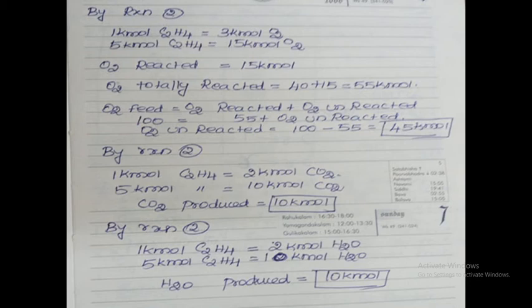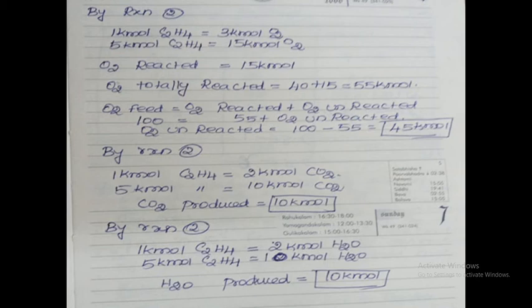Oxygen is utilized in both reactions. Total oxygen reacted = 55 kilomoles. Using the oxygen material balance: oxygen feed = oxygen reacted + oxygen unreacted. So 100 = 55 + oxygen unreacted. Oxygen unreacted = 100 − 55 = 45 kilomoles.